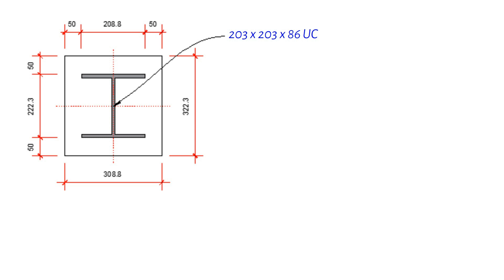First, let's discuss the properties of our cased column. The gross area of a concrete casing is determined by its width and depth. For our example, the minimum width is 308.8 millimeters and the minimum depth is 322.3 millimeters. By multiplying these together, we find a gross area of 99,526 square millimeters. Why do we need to calculate the gross area? I'll leave that for you to think about.